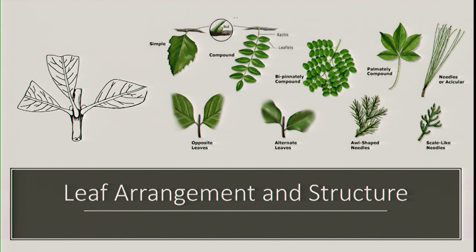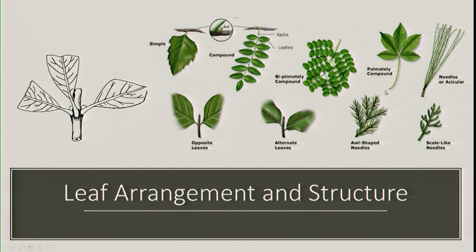Leaf arrangement touches on simple and compound leaves again — there are the rachis, the bud, and the leaflets. You have bipinnately compound; chinaberry is a tree we see around here that's non-native and bipinnately compound. There's palmate simple and palmate compound. A maple would be palmate simple because the bud attaches right there; on palmate compound these are all leaflets and the bud is down at the base.